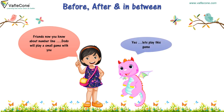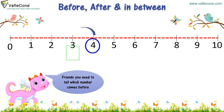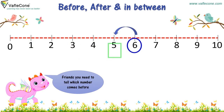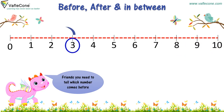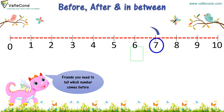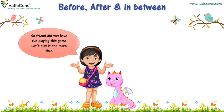Yes, let's play this game! Friends, you need to tell which number comes before. Four — three. Six — five. Eight — seven. Ten — nine. Three — two. Five — four. Seven — six. Nine — eight. So friends, did you have fun playing this game?